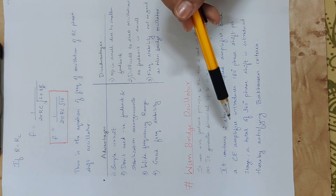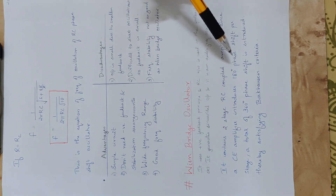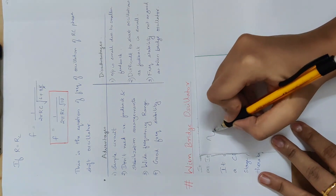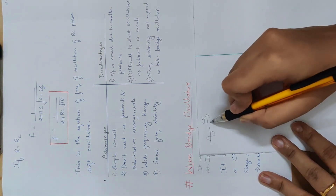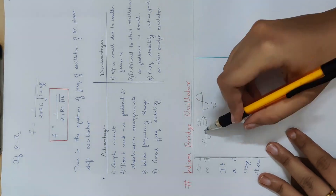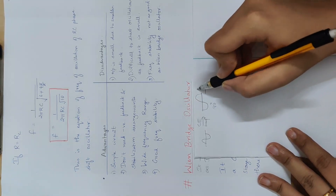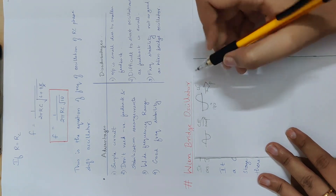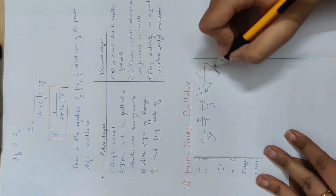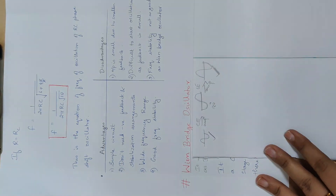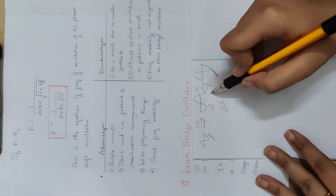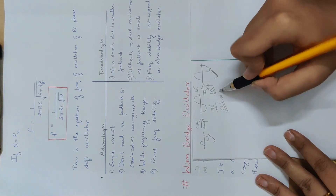One common emitter amplifier provides a 180 degree phase shift. This is the input, one common emitter amplifier is used, and at the output we have 180 degrees of phase shift. With two common emitter amplifiers, the total phase shift becomes 360 degrees, which is equivalent to 0 degrees.